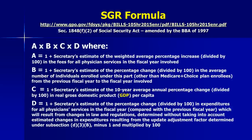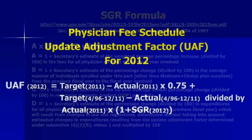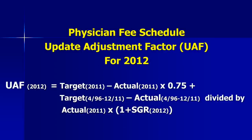This is the SGR formula, shown here to demonstrate how bizarre and complex it really is. If you look under C, you'll see it's attached to the gross domestic product. This is what the Physician Fee Schedule Update Adjustment Factor looks like — another complex, bizarre formula — and as you see in the last line, it incorporates the SGR.